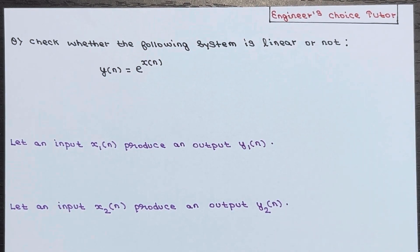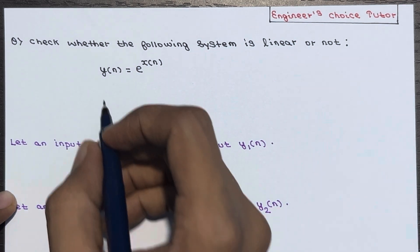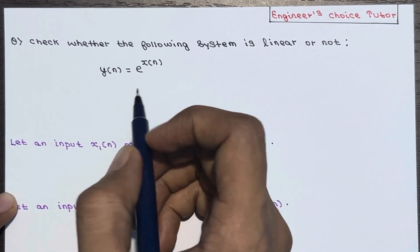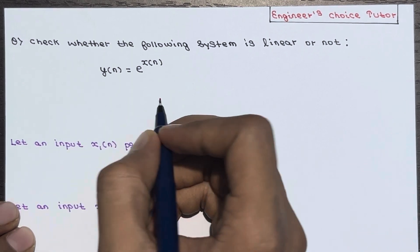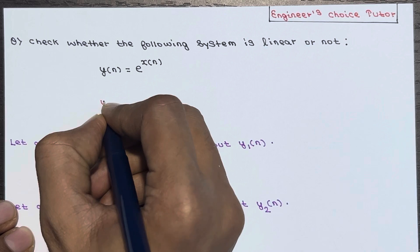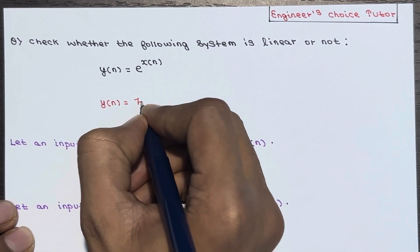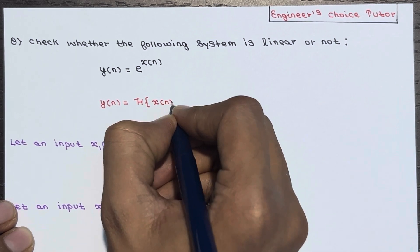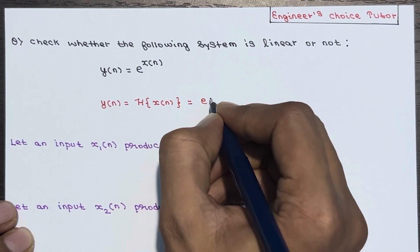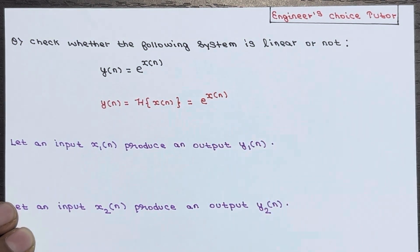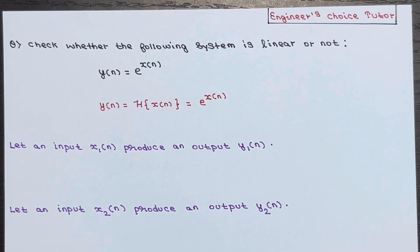Hi everyone, in this lecture we will be discussing one more numerical based on linearity of a system. The question is: check whether the following system is linear or not. The equation is given as y(n) = e^x(n). This is a very important question that has come in exams multiple times. Generally, y(n) equals some transform of x(n), so here the transform of x(n) becomes e^x(n).